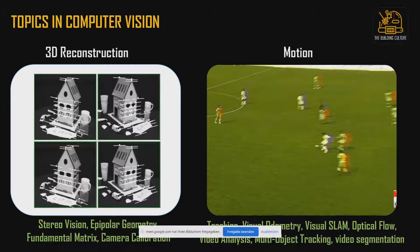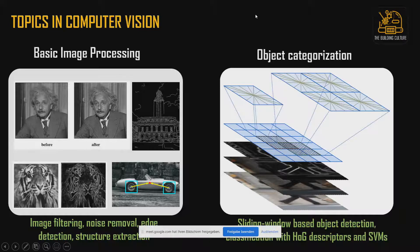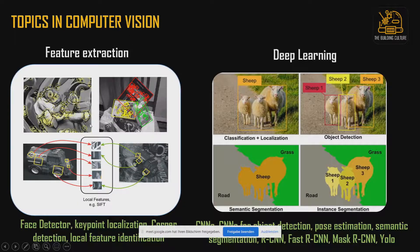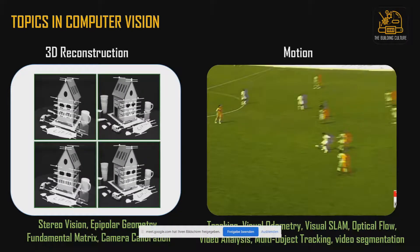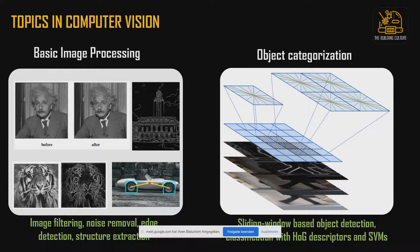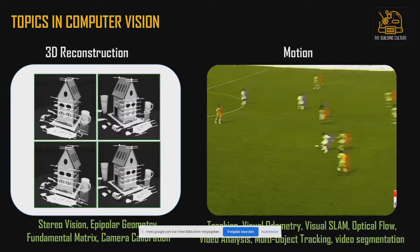All of these seem like a lot to learn, which is why it's tricky to get started with computer vision. The recommended idea is to start with basic image processing, then learn conventional object categorization, then move to feature extraction, then deep learning which automates feature extraction, then 3D reconstruction, and finally motion-driven approaches. Typical university courses follow this structured sequential approach.